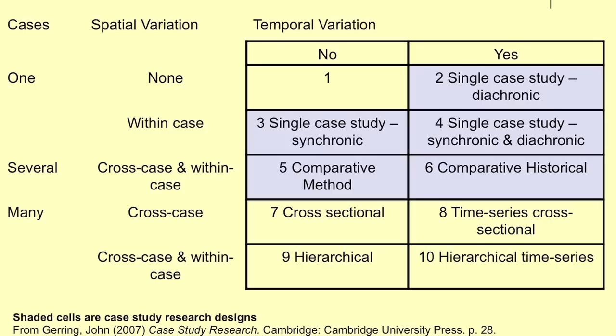Then you've got some variation within a case, and this is probably the most typical situation in case studies. You're looking at one group or one organization — it might be a company — but you're looking at variations across that: perhaps some departments, different employees, or at a larger scale like an election where it might be different candidates, parties, and helpers. It can be just synchronic — at one time point, looking at differences between individuals — or it might be across time, looking at how roles changed as the election went on.